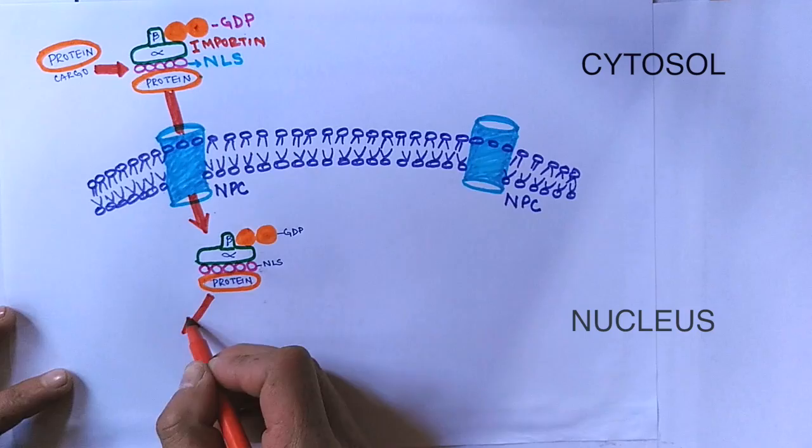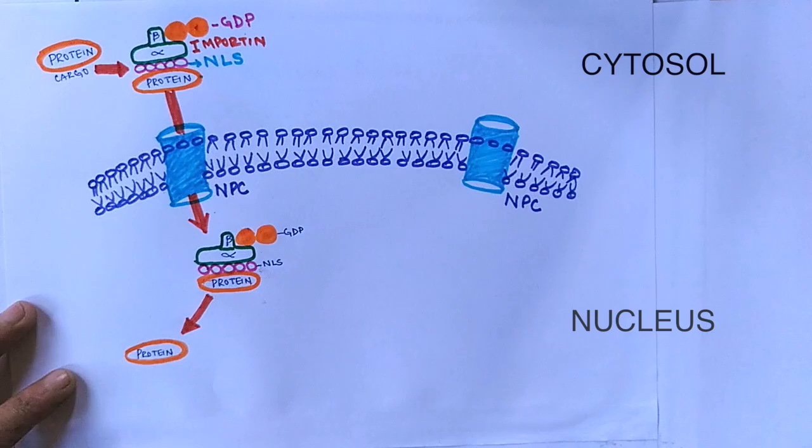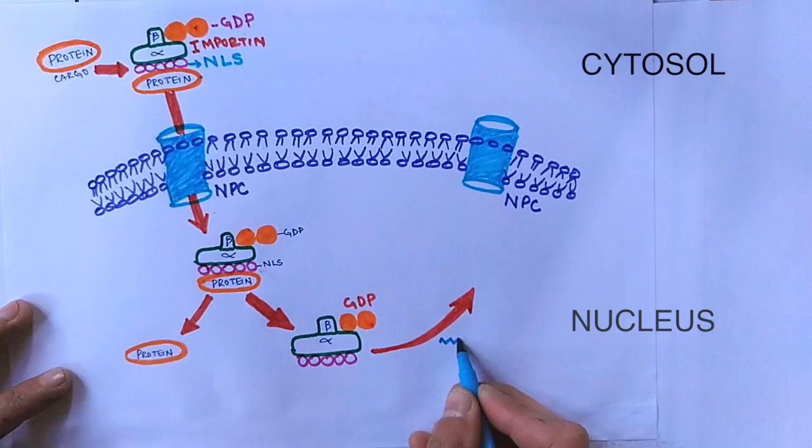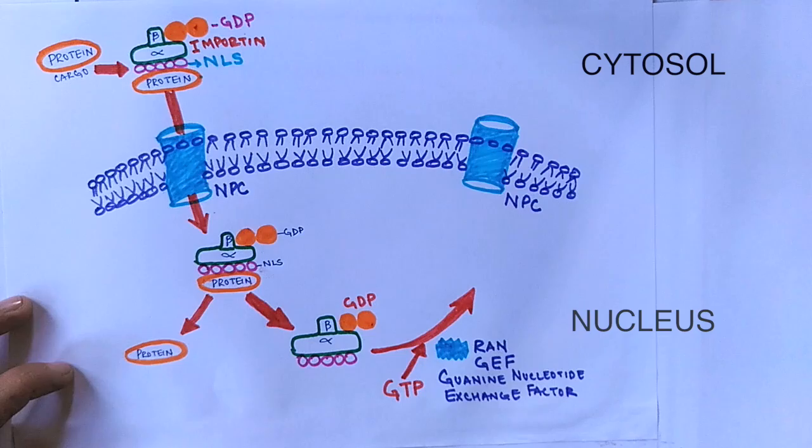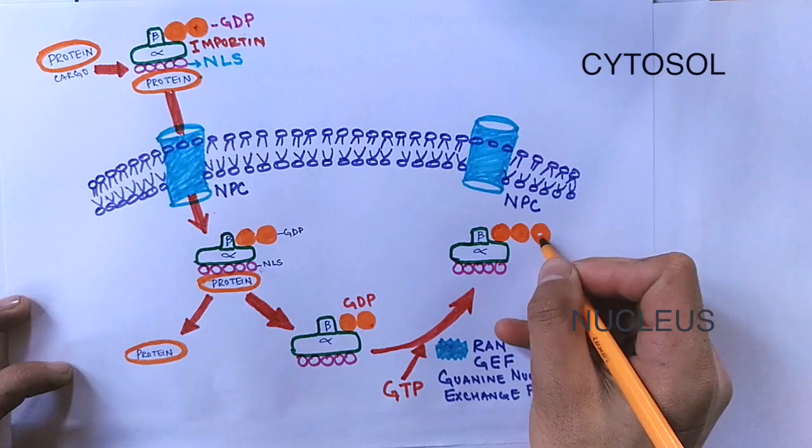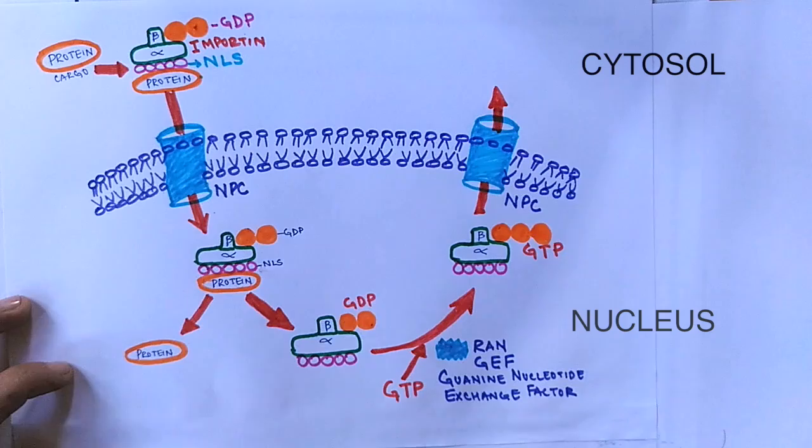Upon getting into the nucleus, the importin complex releases the cargo protein into the nucleus. The empty part, that's the importin and NLS signal, is then interacted with RAN-GEF, that's guanine nucleotide exchange factor, where the GDP is exchanged for GTP, and we get the importin complex in the form of GTP.